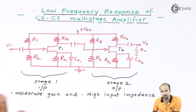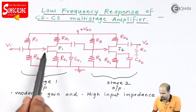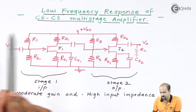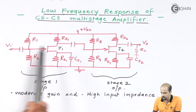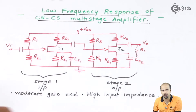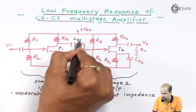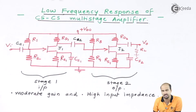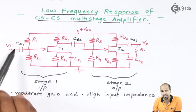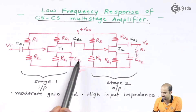We have two stages here. The input stage consists of a voltage divider bias along with JFET J1. RD1 is the drain resistance, RS1 is the source resistance which is bypassed with capacitor CS1. Two coupling capacitors are placed between the first and second stage: CC2. On the input side we have CC1, on the output side we have CC3, so in total we have CC1, CC2, CC3 as coupling capacitors.